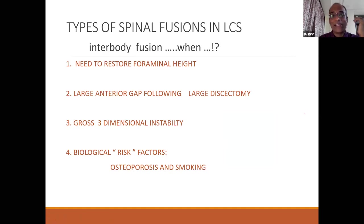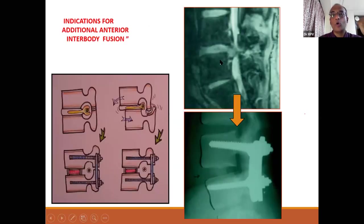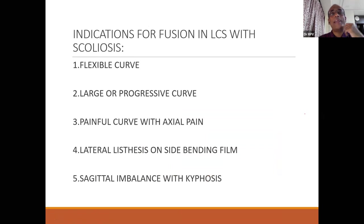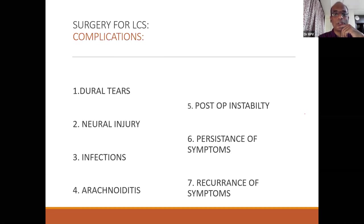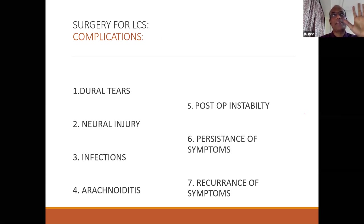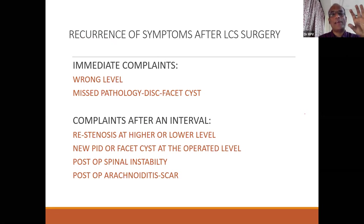In flexible scoliotic curves with painful components, where side bending shows lateral listhesis or imbalance, interbody fusion may be warranted. Once you decide to operate, be prepared for complications: dural tears, infections, arachnoiditis, persistent or recurrent symptoms. Wrong level and missed pathology are the commonest immediate complications. Obesity and smoking are also relevant risk factors.